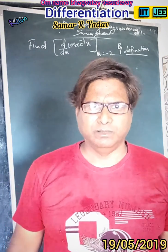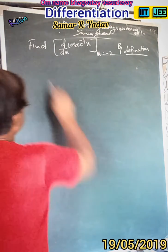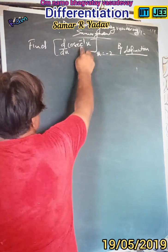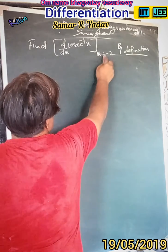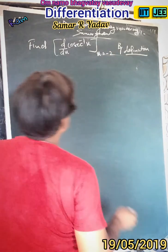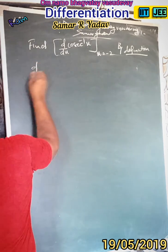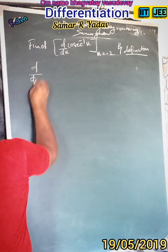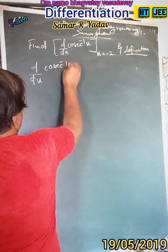Today in mathematics, number C1, numerical based on differentials. Find d/dx of cos⁻¹(x) where x is equal to minus 2, by the method of definition. So we can write here d/dx of cos⁻¹(x).